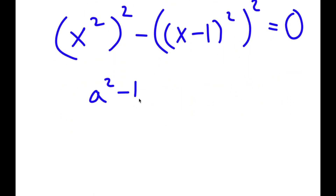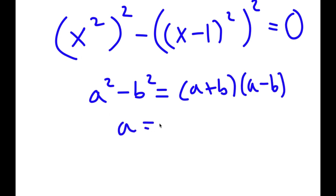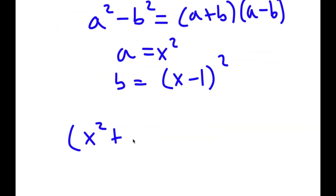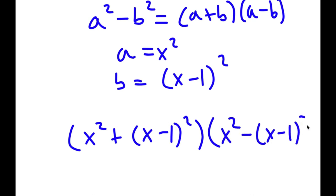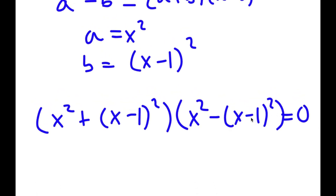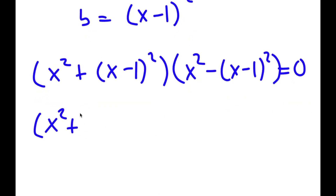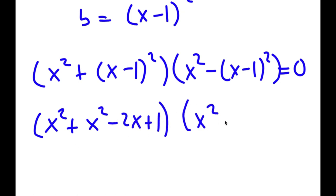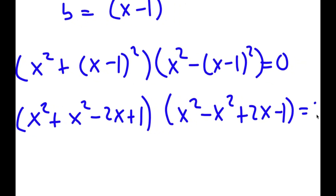x to the power of 4 is the same as x squared to the power of 2, and x minus 1 to the power of 4 is the same as x minus 1 squared to the power of 2. Now, if I have something in the form a squared minus b squared, this equals a plus b times a minus b. So with a as x squared and b as x minus 1 squared, expanding x minus 1 squared gives x squared minus 2x plus 1.